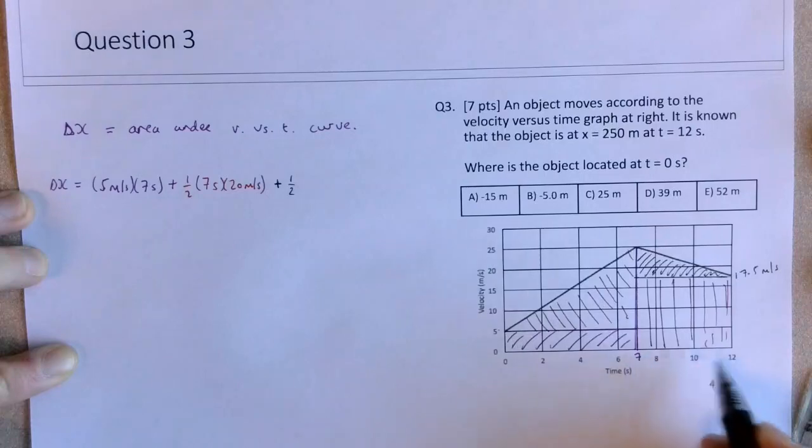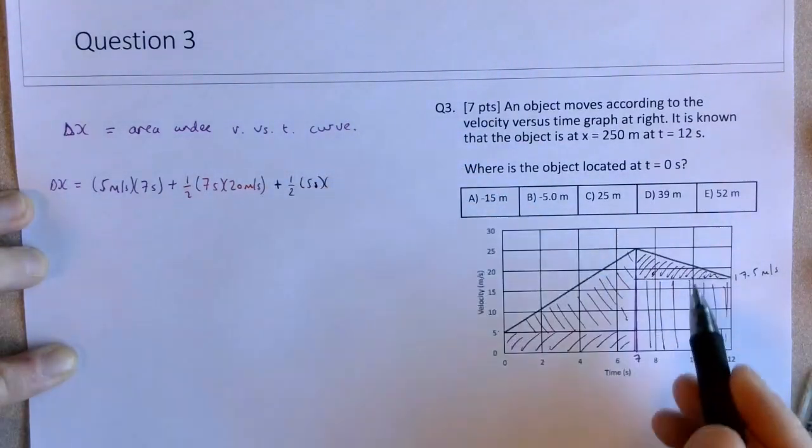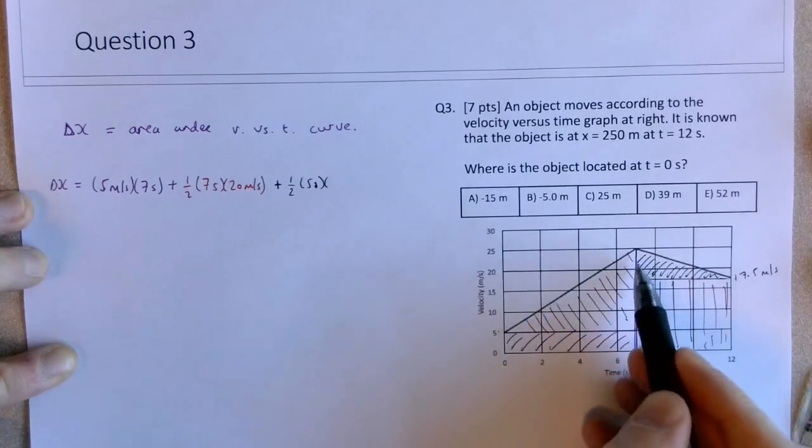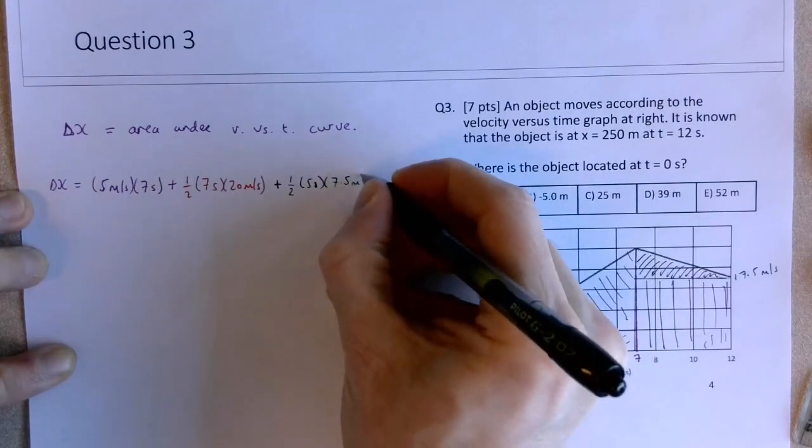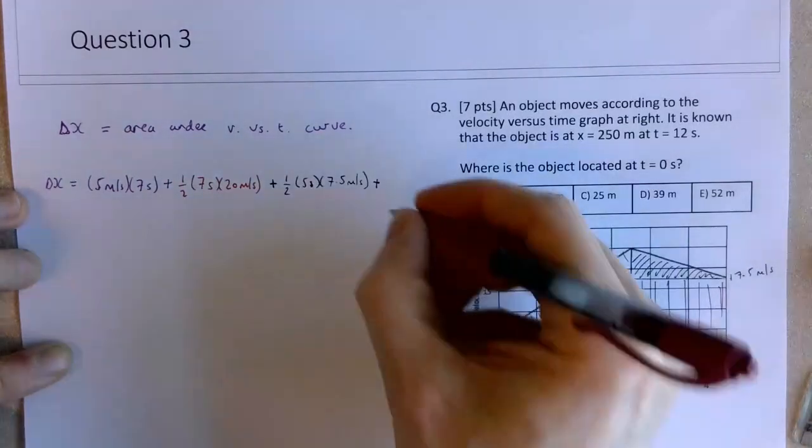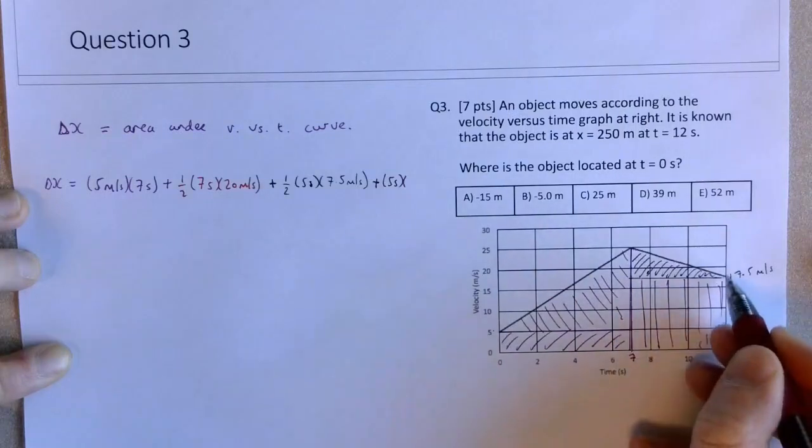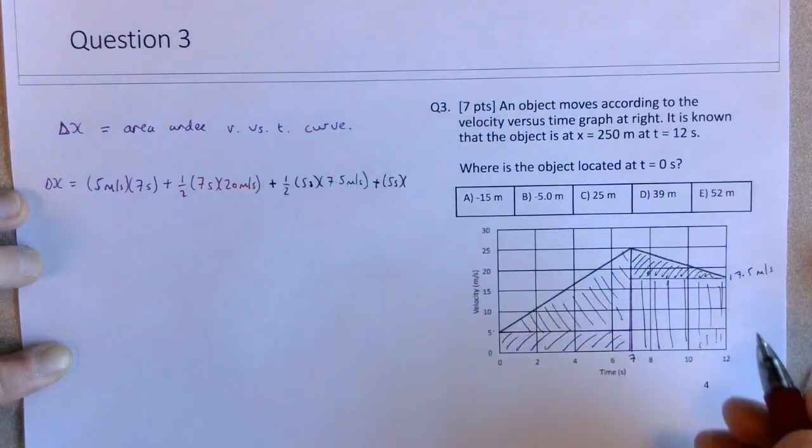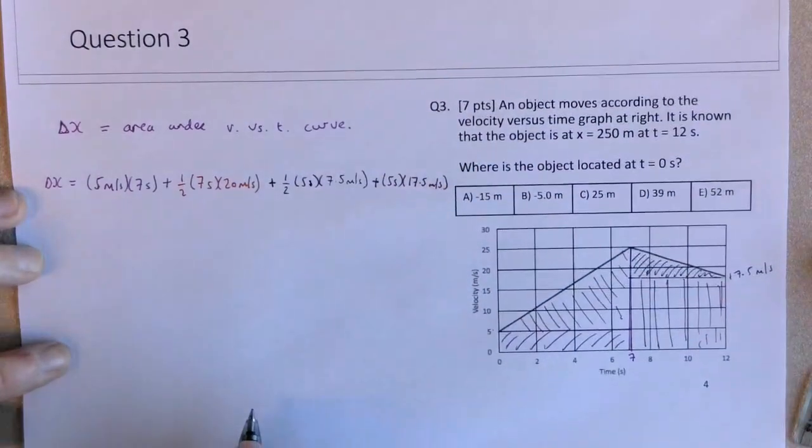Half the base - in this case it's from 7 to 12 seconds, so that's 5 seconds - times the perpendicular height, which is from 17.5 to 25, so that's a 7.5 meter per second height. And then we have this rectangle with a base of 5 seconds times the height of 17.5, going from 0 up to 17.5. So here are four different shapes.